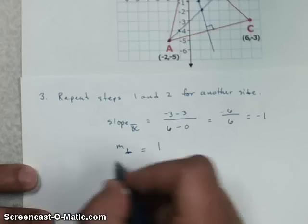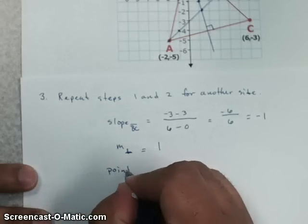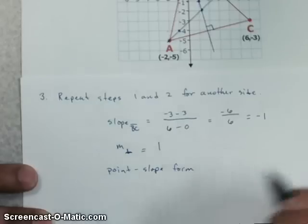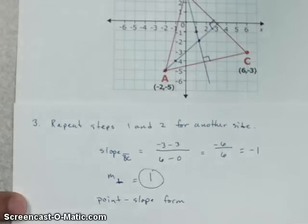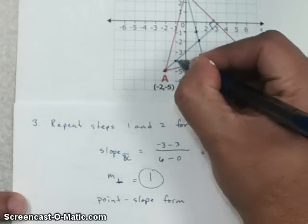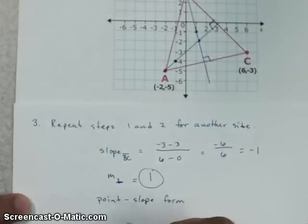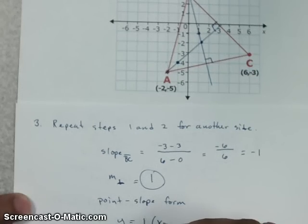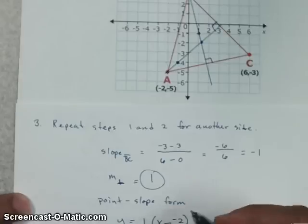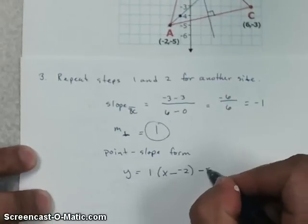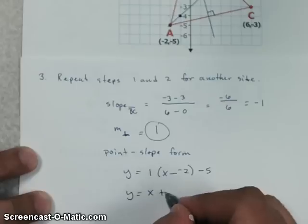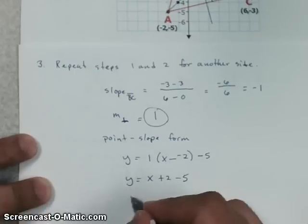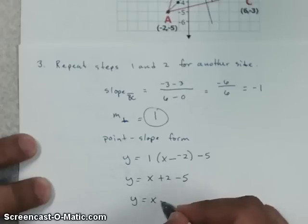So, now we've found the slope. That means we need to use the point-slope formula using our new slope and either of these points, either A or this point that we drew here. So, Y equals 1. I'm going to use point A, so that's going to give me X minus a negative 2 minus 5. That's going to distribute Y equals X plus 2 minus 5. So, this equation comes out to Y equals X minus 3.